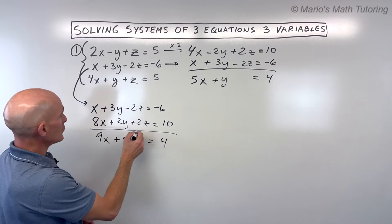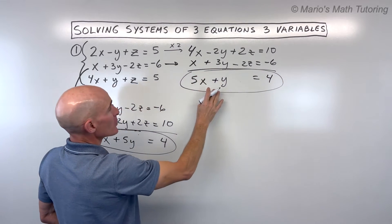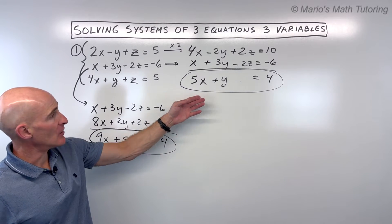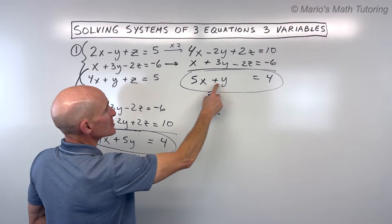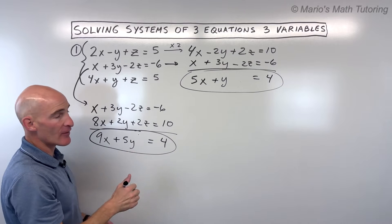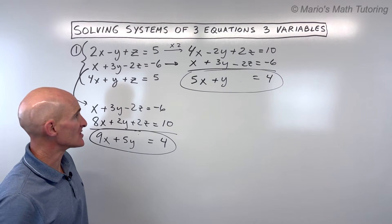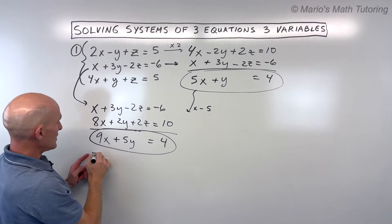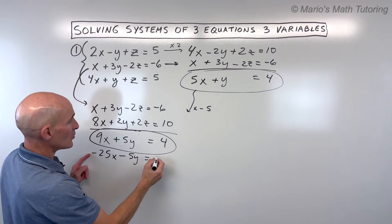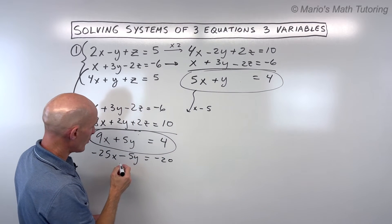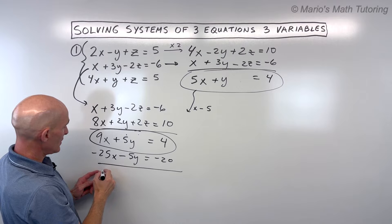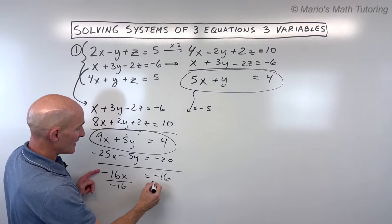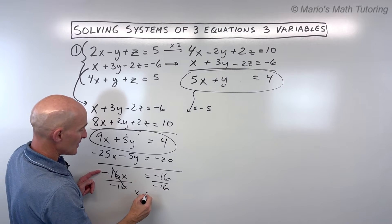Now we're down to two equations with two variables, x and y. We have to pick a variable to eliminate — either the x's or the y's. I think it's going to be easier to eliminate the y's. All we have to do is multiply the first two-variable equation by negative 5. That'll give us negative 5y; with positive 5y from the other equation, the y's cancel when we add. That gives us negative 25x minus 5y equals negative 20, and adding down: negative 16x equals negative 16. Dividing both sides by negative 16, x equals 1.